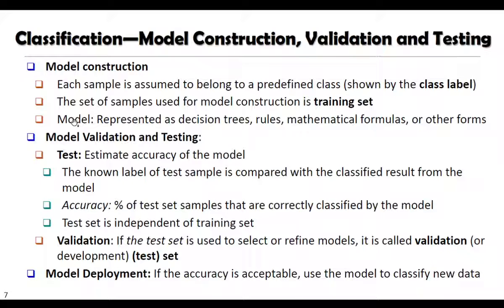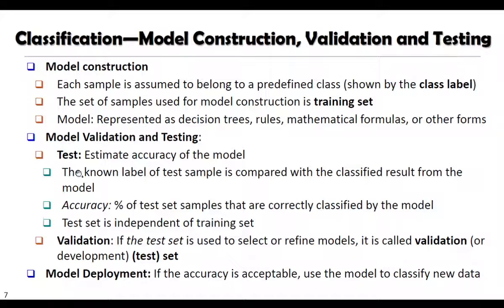With the help of the training set, we develop or construct a model. This model can be represented in different ways: first as a decision tree, second as rules, or it may be represented with the help of a mathematical formula. If we represent the model with the help of decision trees, it is called a decision tree classifier. Once we construct the model, we test it with the help of the test set, which contains the output or label for particular rows, and we check the accuracy of our model.